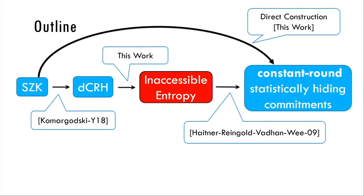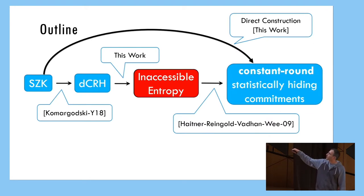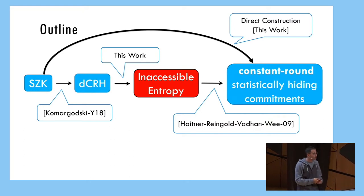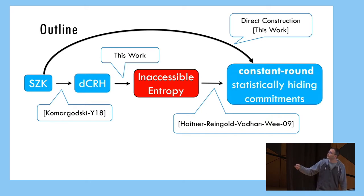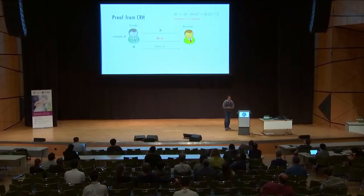So what is the outline? SZK implies DCRH — this was already known. In a paper by Haitner and Reingold, they introduced the notion of inaccessible entropy, and showed that if you have inaccessible entropy, you get constant-round statistically hiding commitments. The missing link is showing that DCRH implies inaccessible entropy. In addition, we have a direct proof that doesn't go through this long line of reductions.